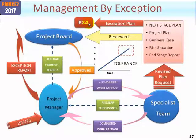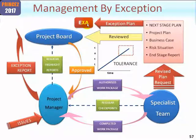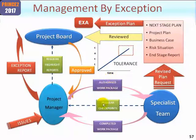This is now held at an exception assessment. The difference to an end stage assessment is that the project board need to authorize or otherwise this exception plan. If the answer is yes, they would again set new stage tolerance, approve the exception plan, and the project manager would now give out new work packages based upon that exception plan. Alternatively, the project board again may make a decision to prematurely close the project if they don't like what the exception plan shows them. Here it is being approved and the project manager is giving out new work packages.